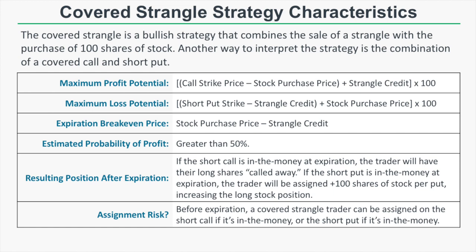The resulting position after expiration depends on whether the short call or short put is in the money. If the short call is in the money, the long shares will be called away because assignment results in selling 100 shares at the call's strike price. If the short put is in the money, we'll buy another 100 shares of stock at the put's strike price.